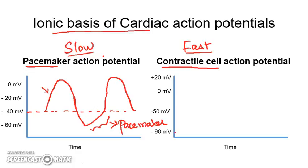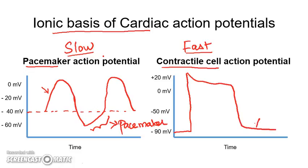In a contractile cell, there is a flat resting membrane potential, unlike the pacemaker tissue which doesn't have a flat resting membrane potential. The contractile cell has a flat resting membrane potential, followed by fast depolarization, then early repolarization, a plateau, and then late repolarization before returning to the resting membrane potential. We are now going to discuss the ionic basis of these two action potentials.